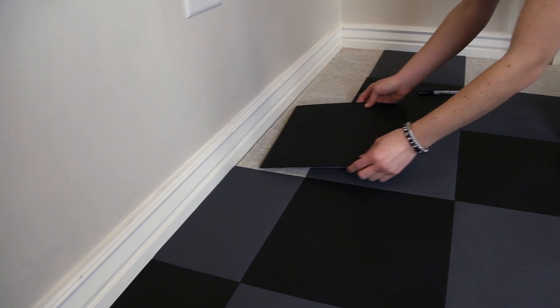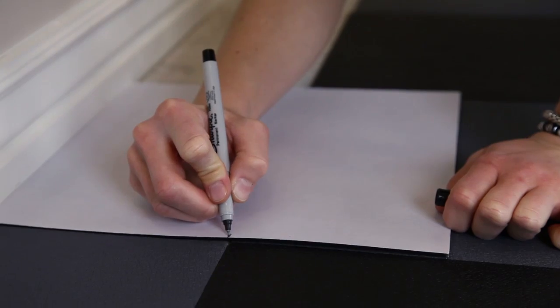If you come up to a wall and a full tile won't fit, mark the spot to cut on the underside of the tile.